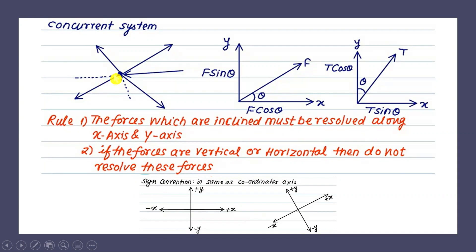Here, there are one, two, three, four, five forces acting or meeting at a point. Five forces' lines of action are meeting at a single point — this system of forces we call a concurrent system of forces. The direction of the force may be outward or inward, that's not a problem. The only requirement is that all the forces' lines of action meet at a single point.